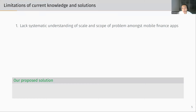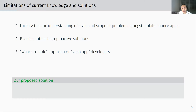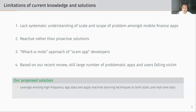In practice, over the past few months, we've been systematically and manually reviewing a few thousand of these problematic apps, and we're still seeing a large number of problematic apps and users falling victim. Our proposed solution is to leverage this existing high-frequency admin data on apps to apply machine learning techniques, which we hope can improve particularly the ex-ante vetting side, as well as ex-post monitoring as well.